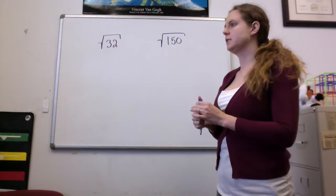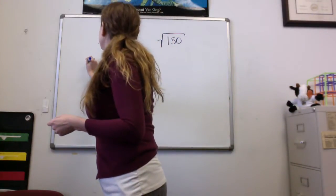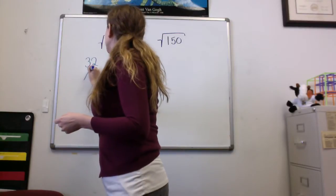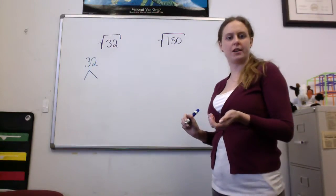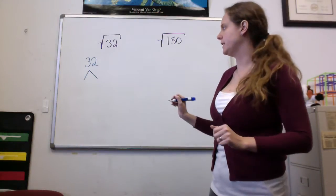So one way to reduce square roots is to figure out what squares are in them. To do this, I'm going to make a factor tree. Doesn't matter how you start your factor tree, we're all going to get down to the same final answer.